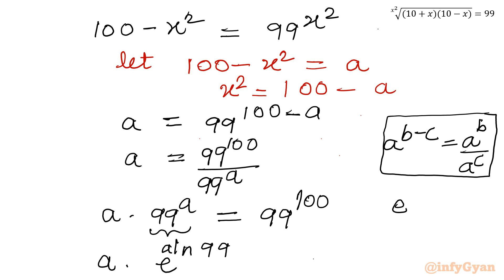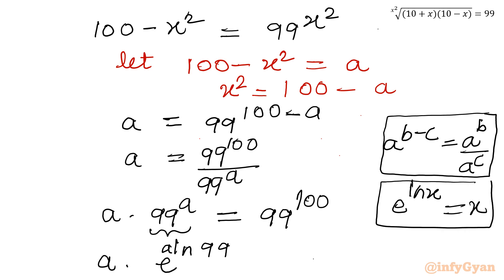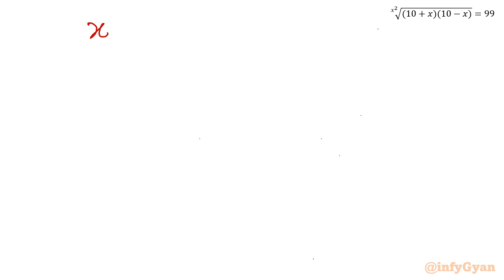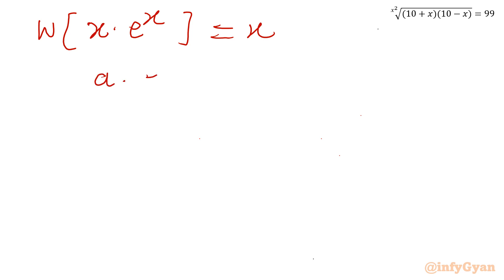Using the property e raised to the power ln x equals x, we can write 99 as e raised to the power ln 99. So our equation becomes a times e raised to the power (a times ln 99) equals 99 to the power 100. Now I will apply the powerful Lambert W function. If a function has the product x times e raised to the power x, then its Lambert W function gives x. This is our equation in a.